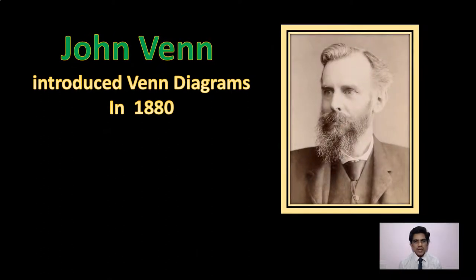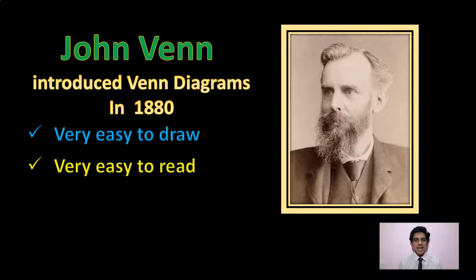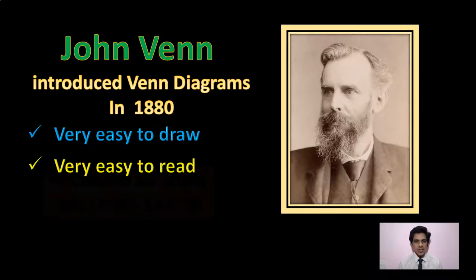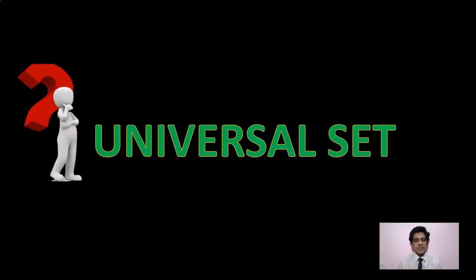One important mathematician of England is John Venn. The diagram is represented by his name. Before we go into the actual concept of Venn Diagrams, we have to discuss one important concept which is called Universal Set.